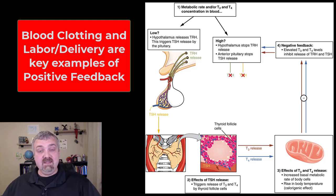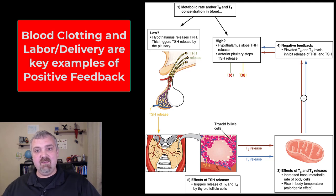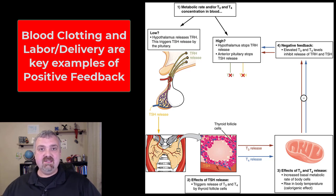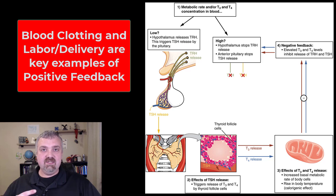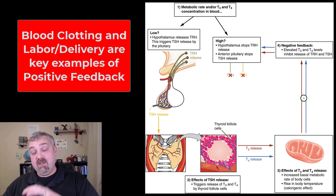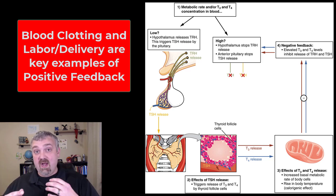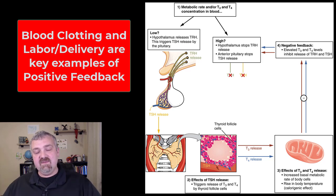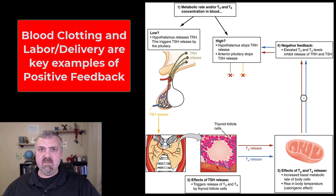Oxytocin is the primary hormone that leads to the ejection of the baby during labor and delivery. The initiation of labor and delivery is going to trigger more and more oxytocin being released and more muscle contraction, which is going to push the baby onto the cervix, which is going to stimulate more oxytocin release, which is going to push the baby harder. That's an example of a positive feedback system driven by hormones.